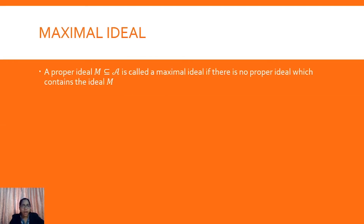A maximal ideal is a proper ideal M contained in the Banach algebra such that there is no other proper ideal which contains M. So a proper ideal is a maximal ideal if we cannot find any other ideal which contains this M. That is the definition of the maximal ideal.